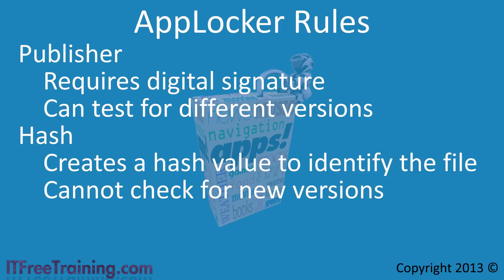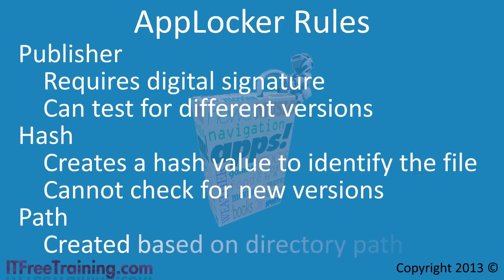The last rule type is the path rule. This rule is created based on the directory path on the drive. You can allow or disallow software to run based on which directory it is in. For example, you could create rules that allow software in the program files directory but deny software run from the desktop or user documents folders. Using a combination of these rules you can achieve some good results.